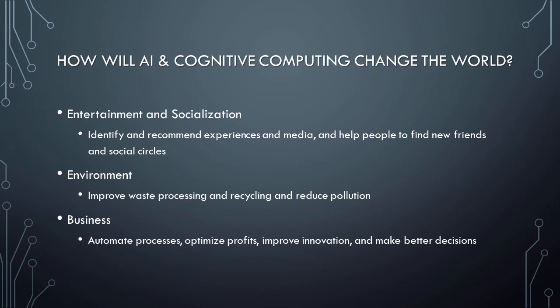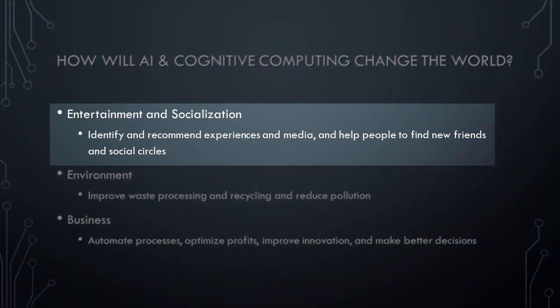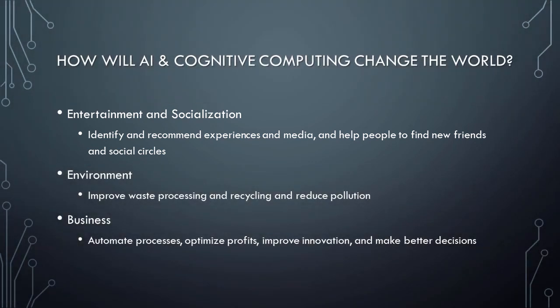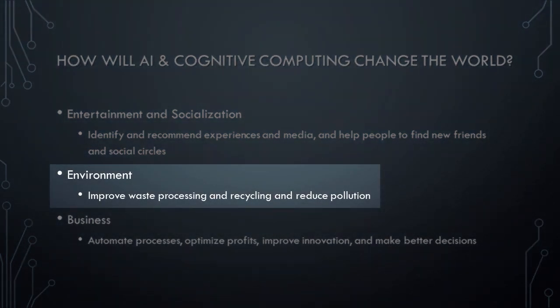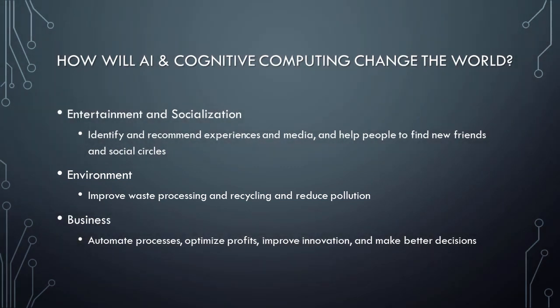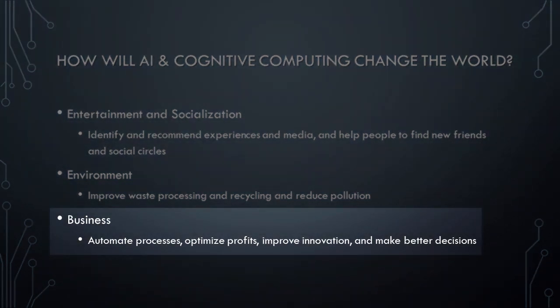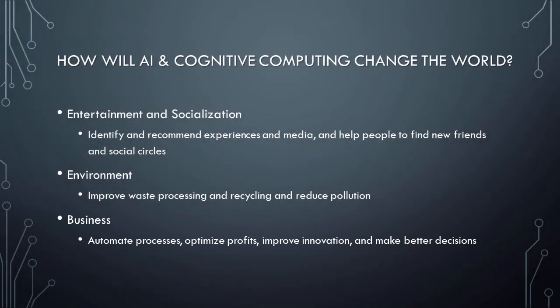With respect to entertainment and socialization, AI and cognitive computing will be used to identify and recommend experiences and media, and help people find new friends and social circles. With respect to the environment, AI and cognitive computing will be used to improve waste processing and recycling, and reduce pollution. Finally, for business, AI and cognitive computing will be used to automate processes, optimize profits, improve innovation, and help managers make better decisions.